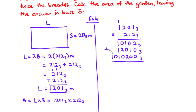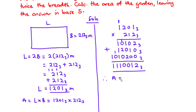Now let's add all three partial products in base 3. Working column by column: 2 plus 0 plus 0 is 2. 0 plus 1 plus 0 is 1. 1 plus 0 plus 2 is 3, so that is 1 remainder 0; write 0, carry 1. Then summing gives 4, which is 1 remainder 1; write 1, carry 1. Continuing: 1 plus 0 is 1, and 1 plus 0 is 1. Therefore the area of the rectangular backyard garden is 1110012 base 3 meter square.